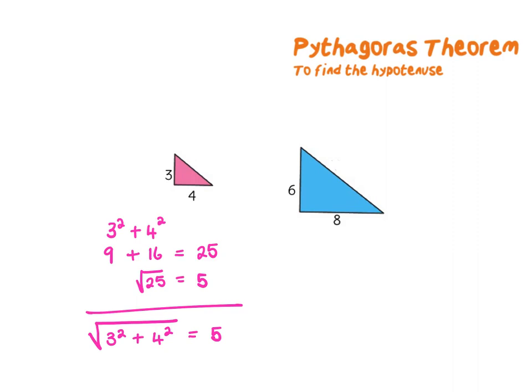Now let's do the same for the blue triangle. 6 squared plus 8 squared gives me 36 plus 64. These added together will give me 100 and the square root of 100 equals 10.